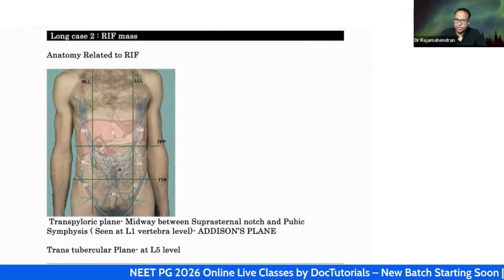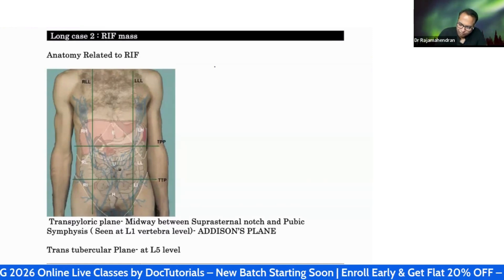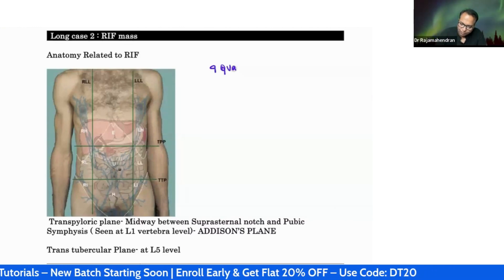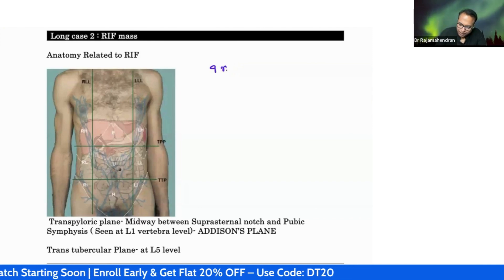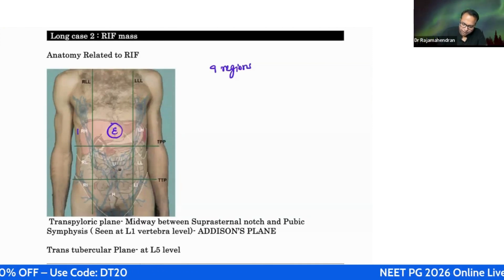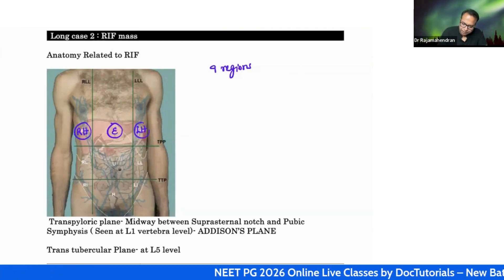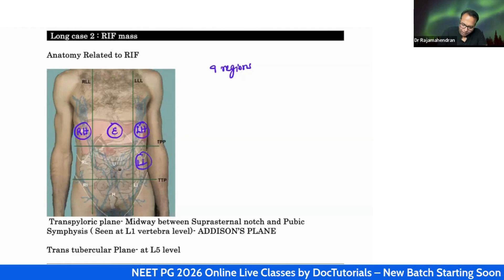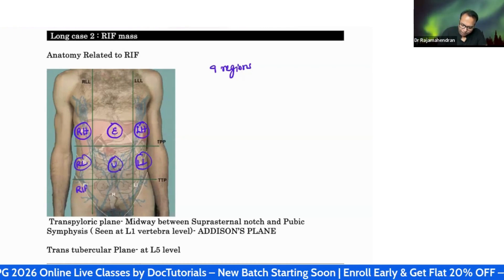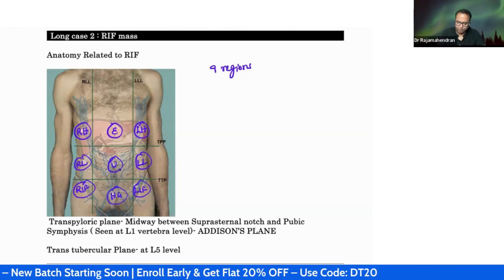To understand what is the right iliac fossa, first remember we have nine regions in the abdomen as shown in the picture. These are: epigastric region, right hypochondrium, left hypochondrium, left lumbar, right lumbar, umbilical, right iliac fossa, left iliac fossa, and hypogastric region. Totally nine regions.